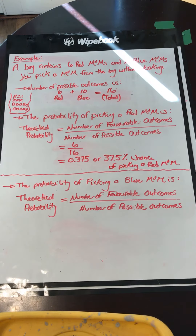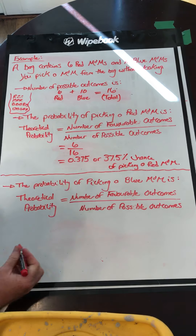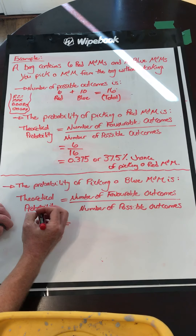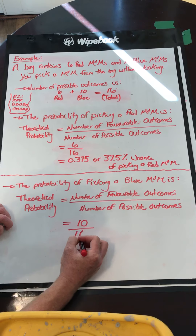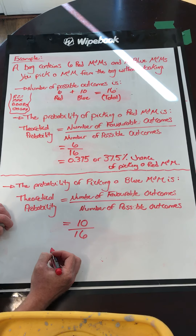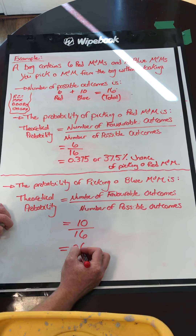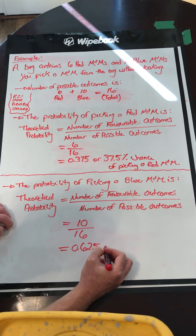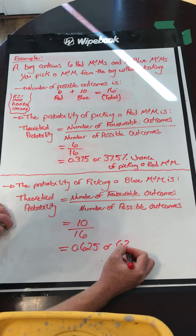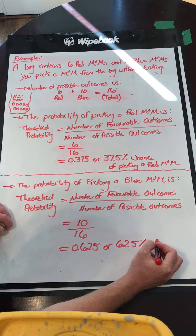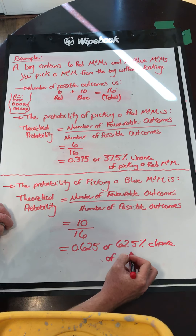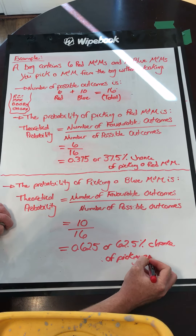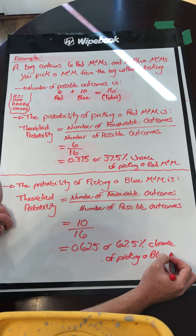Now we want to calculate the probability of picking a blue M&M. The number of favorable outcomes — I look at the bag and I see there are 10 blues — so there are 10 favorable outcomes, divided by the number of possible outcomes, which is the total, 16. That equals 0.625 or 62.5% chance of picking a blue M&M.